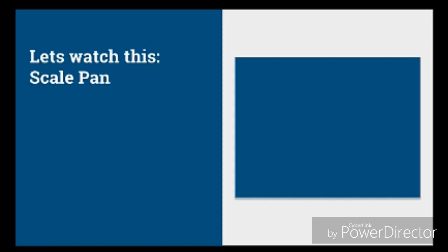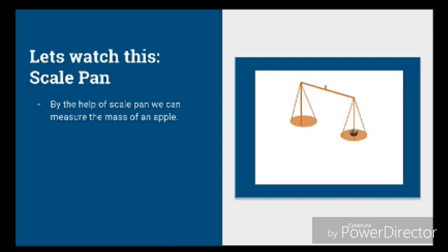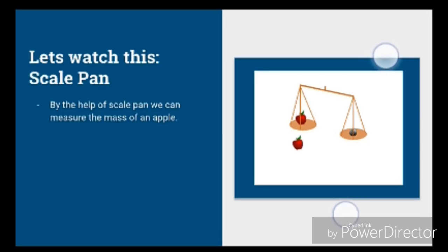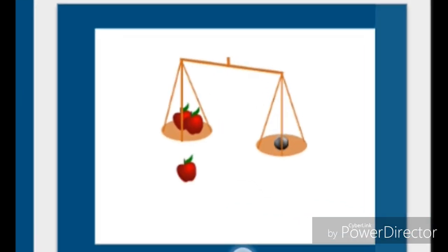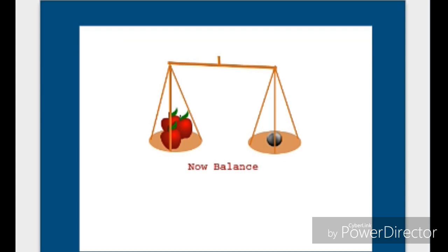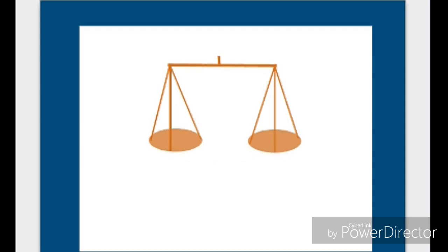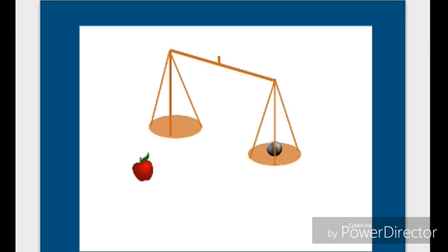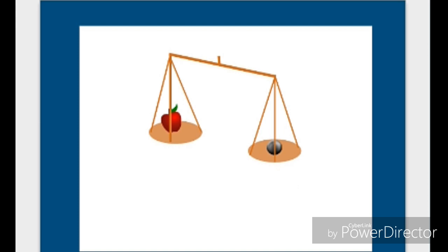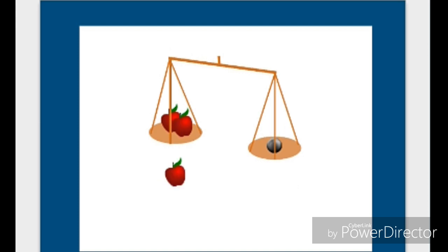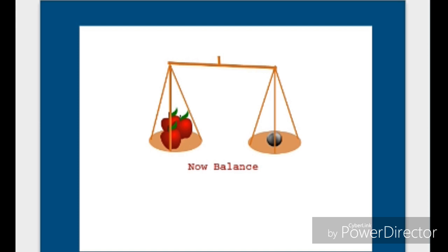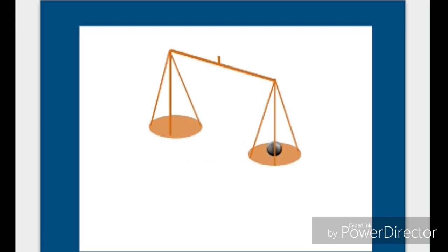Let us look at this scale pan. You are all familiar with a scale pan. By the help of a scale pan, we can measure mass. On the right side of the video, we can see measuring the mass of an apple using a scale pan. The mass on the right side is the known quantity.